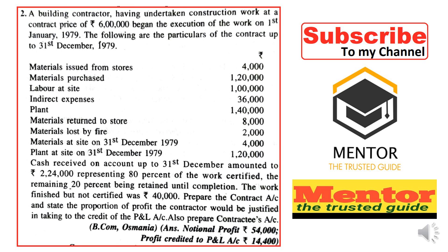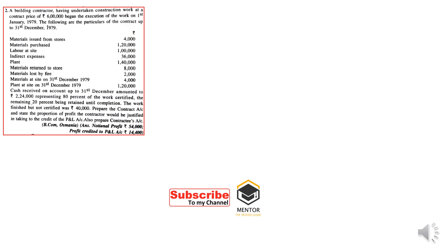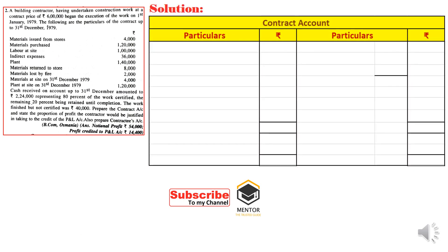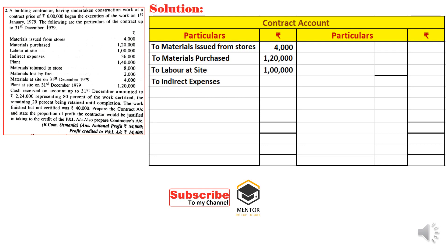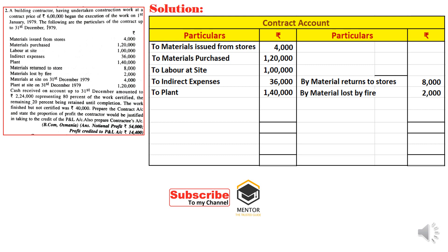Writing the contract account values: material issued from store 4,000; material purchased 1,20,000; labor at site 10,000; indirect expenses 36,000; plant opening value 1,40,000 on the debit side. On the credit side: material returned to store 8,000; material lost by fire 2,000; material at site (closing) 4,000; plant at site closing value 1,20,000.